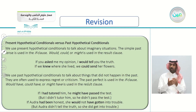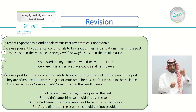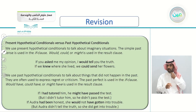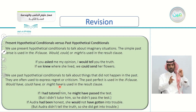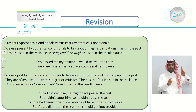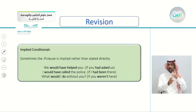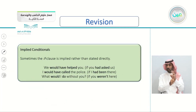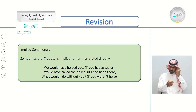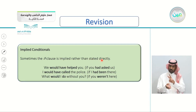We use the simple past in the if clause, and in the result clause, we use would, could, or might. On the other hand, in the past hypothetical conditionals, we use it to talk about things that did not happen in the past — things that did not happen. We use it often to express regret and criticism. We use the past perfect in the if clause, and in the result clause, we use would have, could have, or might have. And we also learned about implied conditionals — it is implied rather than stated directly.